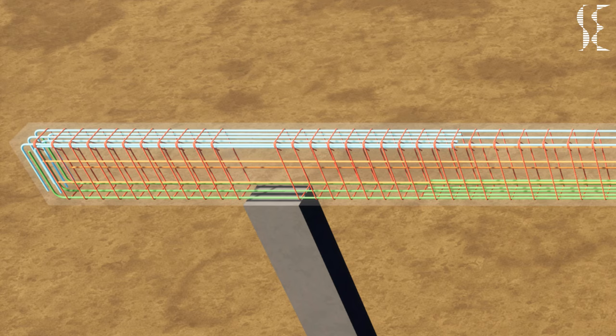For the cantilever beam, the top and bottom bars from the adjacent span are continued till the end of the cantilever. Here the stirrups are placed at closer spacing throughout the cantilever portion.